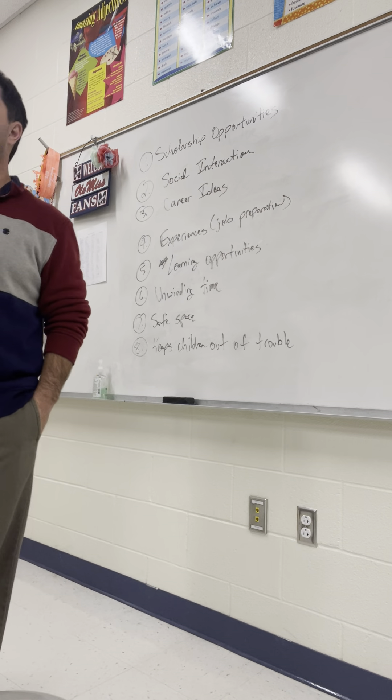So let's take a look at these: scholarship opportunities, social interaction, career ideas, experience for job preparation, learning opportunities, unwinding time, safe space, keeps children out of trouble, encourages good grades. Now keep in mind, you have to convince taxpayers. They're the ones wanting to do away with this to save, say, $500 a year. You have to convince an adult — 20, 30, 40, 50, 60 years old — that he or she should continue paying taxes so that you can have fun things at school.